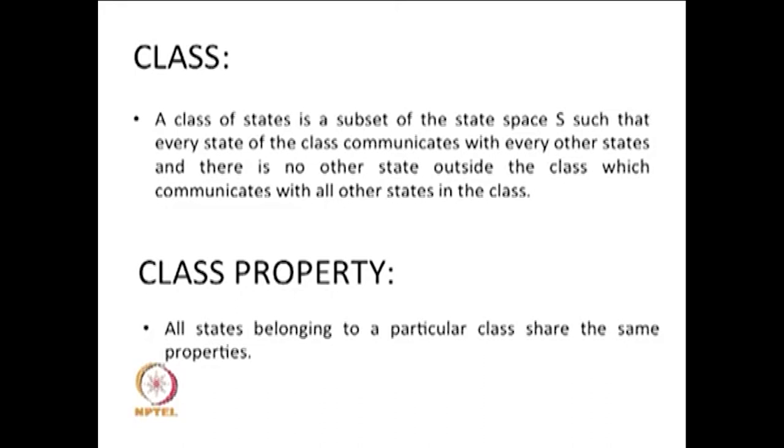You can start with one element, then include one more element, one more element. Once the second property is satisfied — meaning you cannot include one more state and still call it a class — then you stop framing the class. So the subset is created by including states one by one as long as the class property is satisfied. We are going to discuss how to create the class via simple examples later.